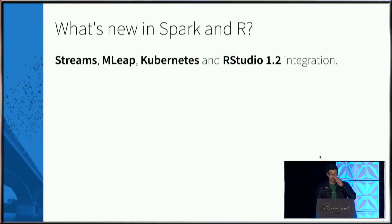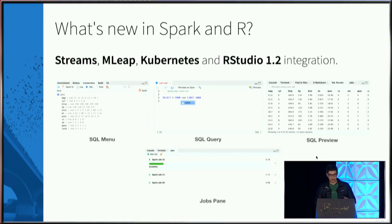What's new in sparklyR? We covered streaming. Last year we worked on MLEAP, which allows you to take a pipeline and export it out of Spark into any JVM-compatible Java environment. We added support for Kubernetes and RStudio 1.2 integration — so you can write a custom SQL query, or use the jobs pane to track your Spark jobs.